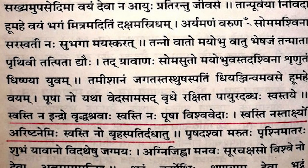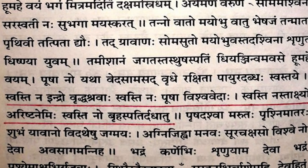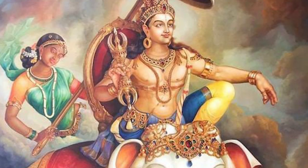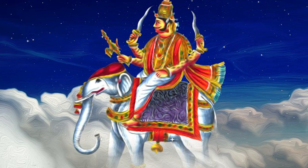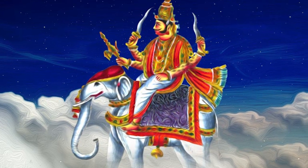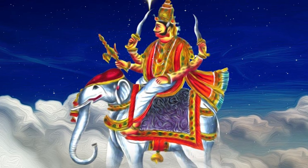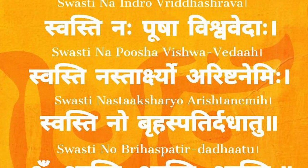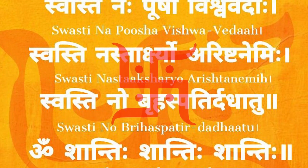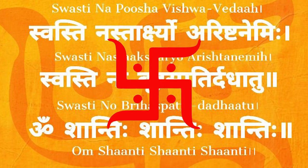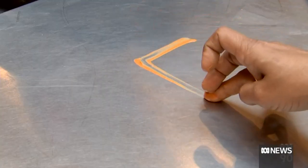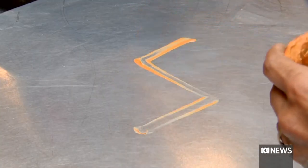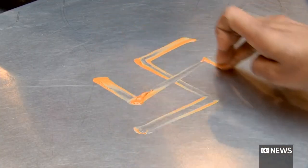These ancient verses paint a cosmic picture. They speak of redemption, of Indra and Pusha as celestial entities bestowing their blessings upon us. And within these verses lies the representation of the Swastika — a figure that captures the essence of auspiciousness.